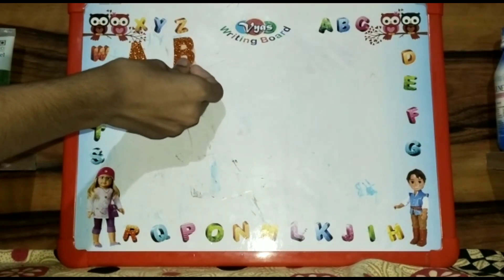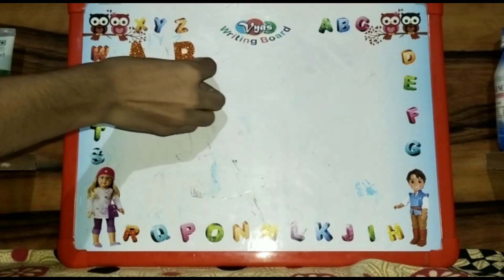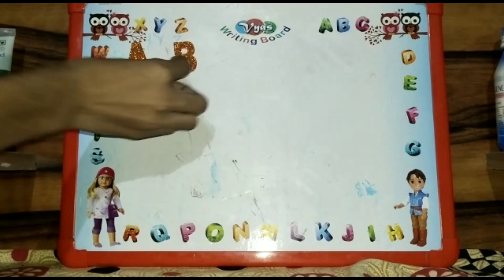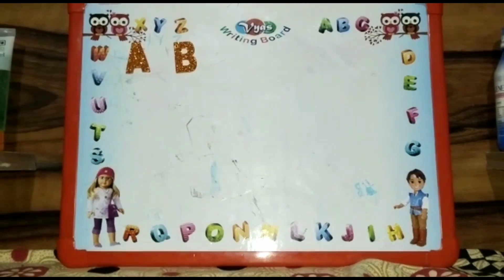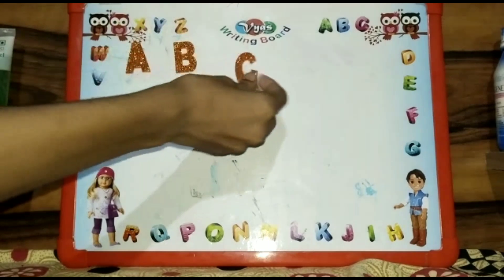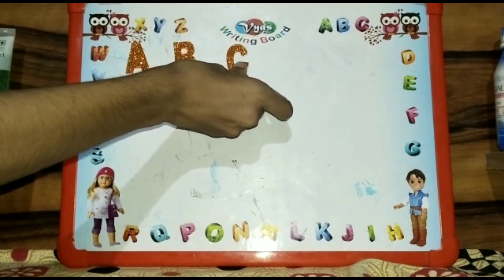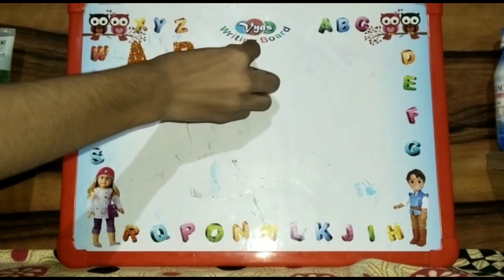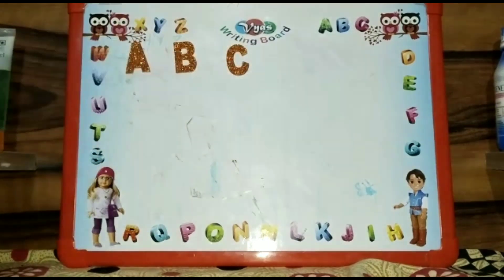B is for Ball. Ball yani gained. C is for Cat. Cat yani billi.